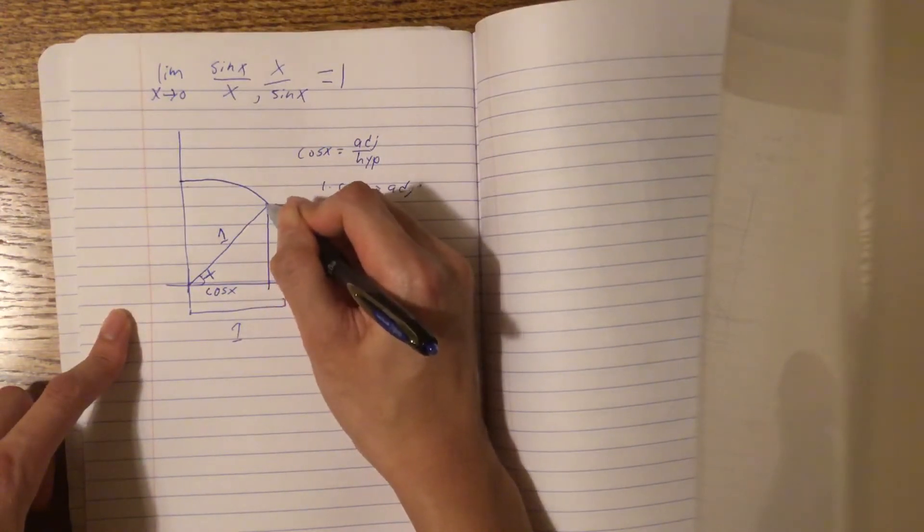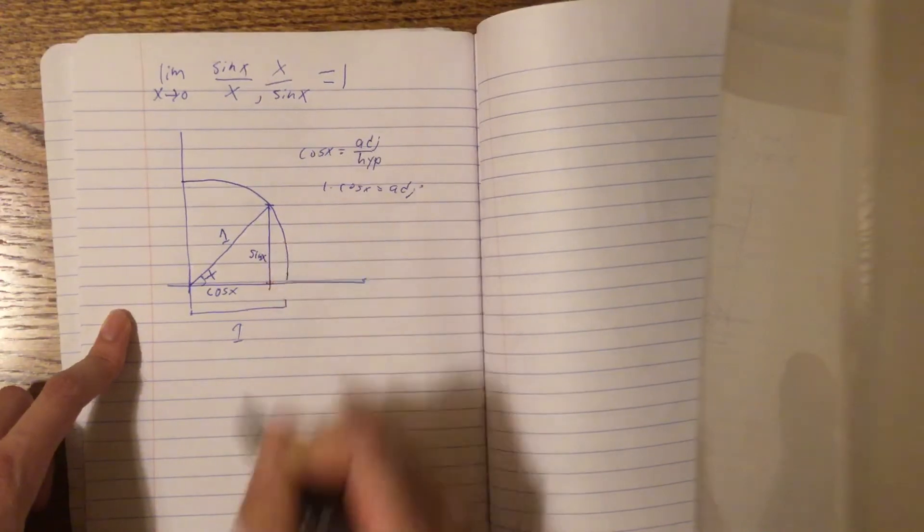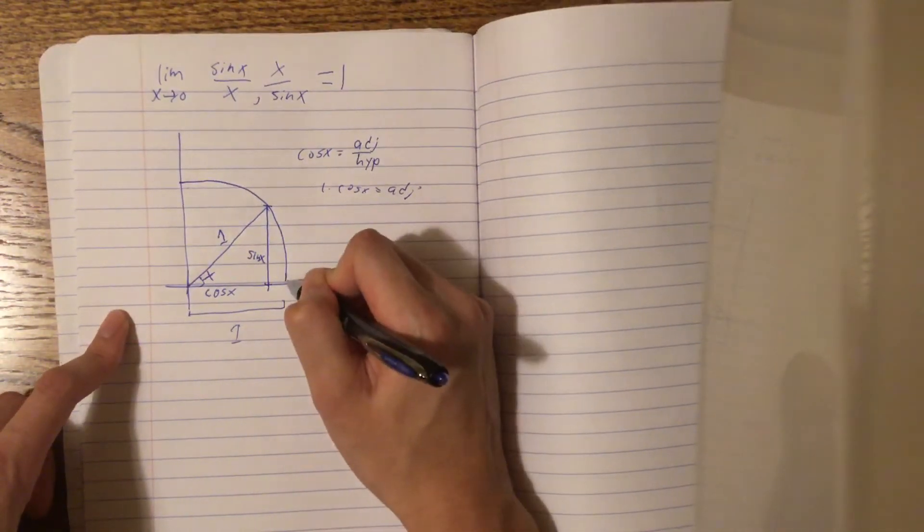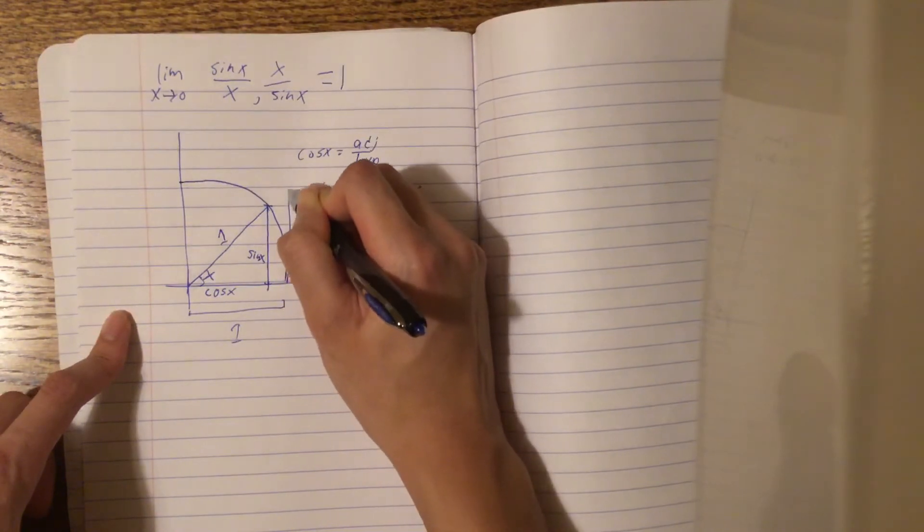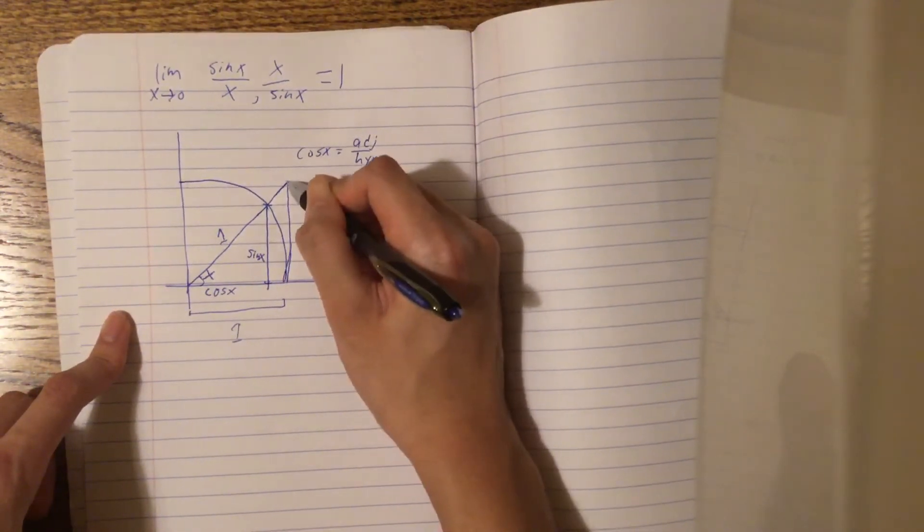With the same reasoning, this height here is sine of x. And lastly, let's make a secondary triangle. Then what's this height from here to here?